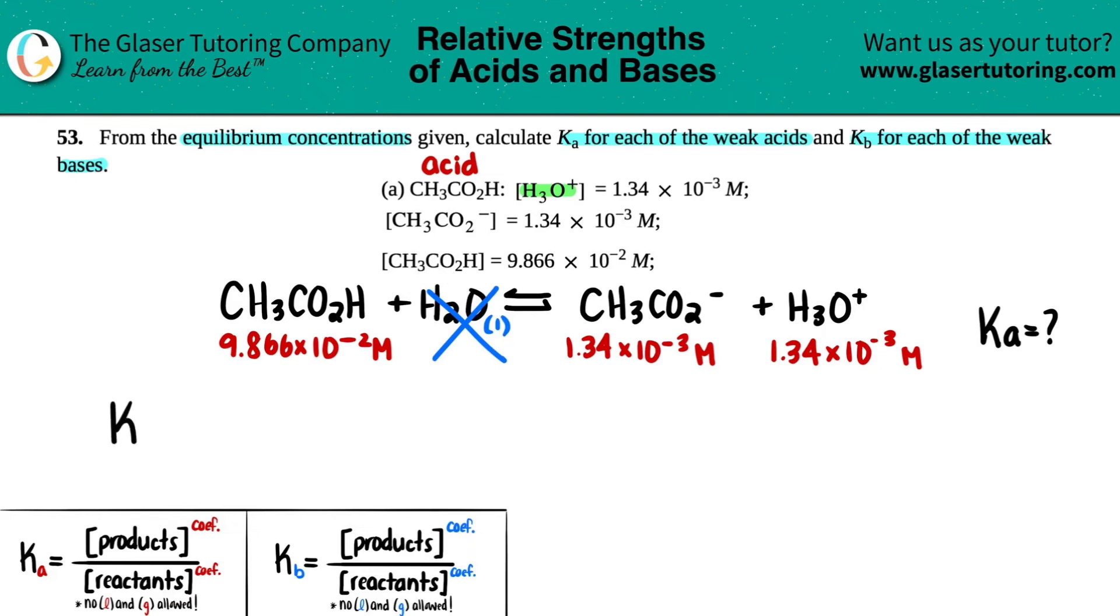So I'm not going to put water in my equation. So Ka equals products over reactants. So it would be the CH3CO2 minus, that's the acetate, times the H3O plus all over your acid, CH3CO2H.